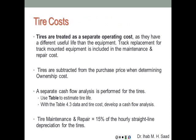Tires are treated as a separate operating cost because they have a different useful life than the equipment. A loader may operate for 10,000–20,000 hours, but tires must be replaced regularly. Tire costs are subtracted from the purchase price when determining ownership cost, with a separate cash flow analysis for tires. A table estimates tire life by equipment type and operating conditions — for example, hauler tires last about 3,200 hours under average conditions but only 2,200 hours under unfavorable conditions. Tire maintenance and repair is 15% of the hourly straight-line depreciation for the tires.